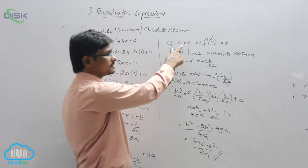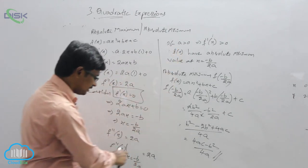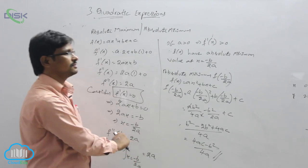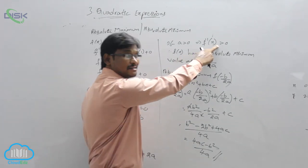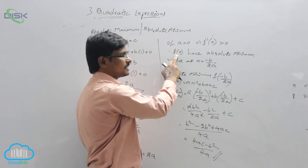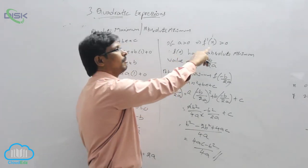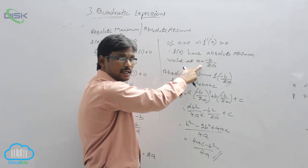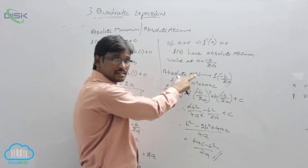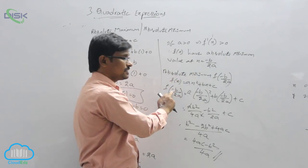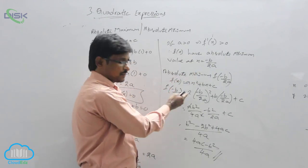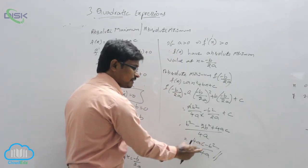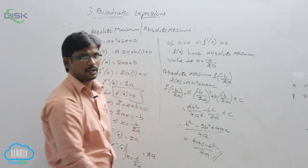Now if a is less than 0, then f double dash of x becomes less than 0. If f double dash of x is less than 0, then f of x has an absolute maximum value at the point x equals minus b by 2a. The absolute maximum value will be f of minus b by 2a, and doing the same simplification we again get 4ac minus b squared by 4a.